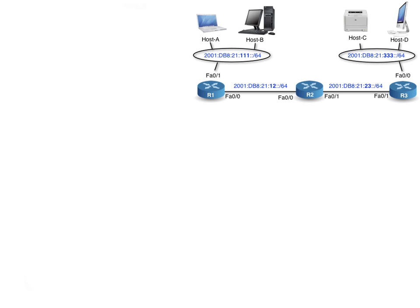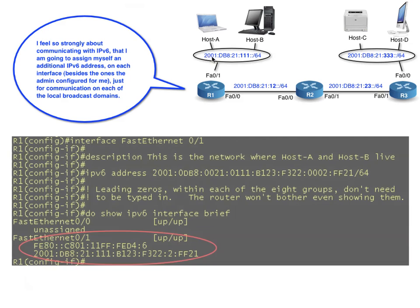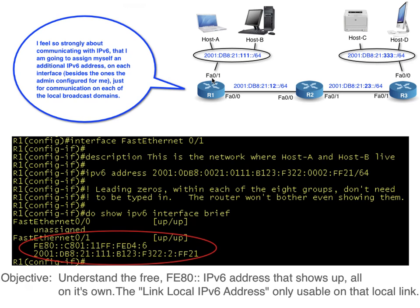One of the things I find very interesting with IPv6 is that it likes to communicate — it really enjoys to talk. When we configure IPv6 on interfaces, we not only get the IPv6 address we assigned, we also get a second IP address. The focus of this short video is to explain exactly what that extra IPv6 address is, as we investigate the link-local IPv6 address.